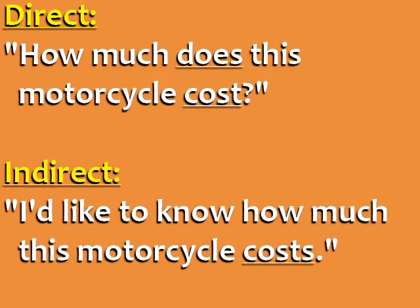Direct: 'How much does this motorcycle cost?' Indirect: 'I'd like to know how much this motorcycle costs.' To form the indirect question, we eliminate the auxiliary verb 'does' and change 'cost' to 'costs.'